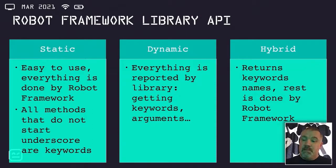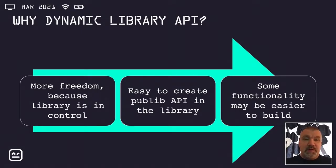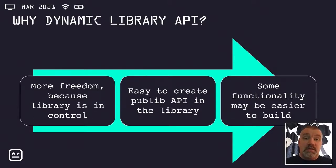So there are three different kinds of APIs. Most people are familiar with the static library API, but what are the benefits of the dynamic library API? Well, there are multiple reasons. In the dynamic library API, there's more freedom for the library builders — what things are exposed to the Robot Framework side, what keywords are exposed, perhaps you want to do some auto-formatting, argument conversion, or something. That may be difficult in the static library API, but because you are in control in the dynamic library API — returning arguments, keywords, and documentation — that's relatively easy to do.